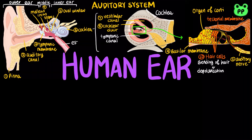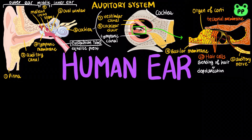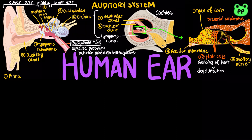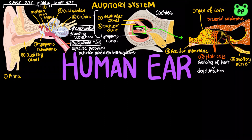The middle ear also consists of two additional openings. The Eustachian tube connects to the pharynx and equalizes pressure between the middle ear and the atmosphere, whereas the round window below the oval window dampens sound waves, preventing pressure waves from reverberating within the ear and causing prolonged sensation.